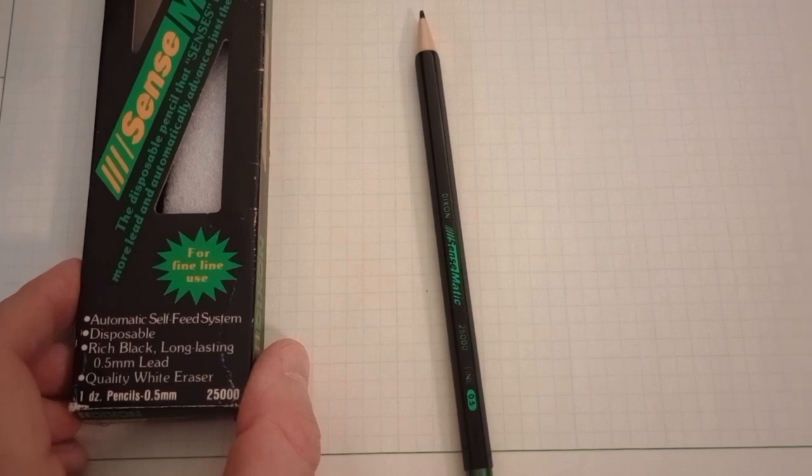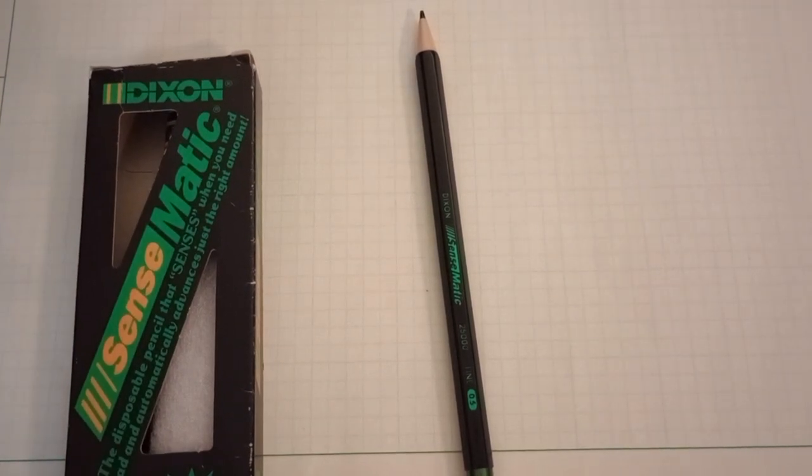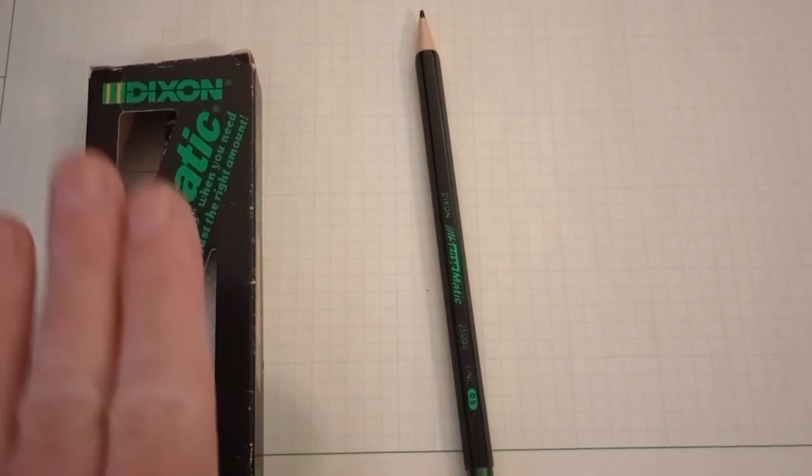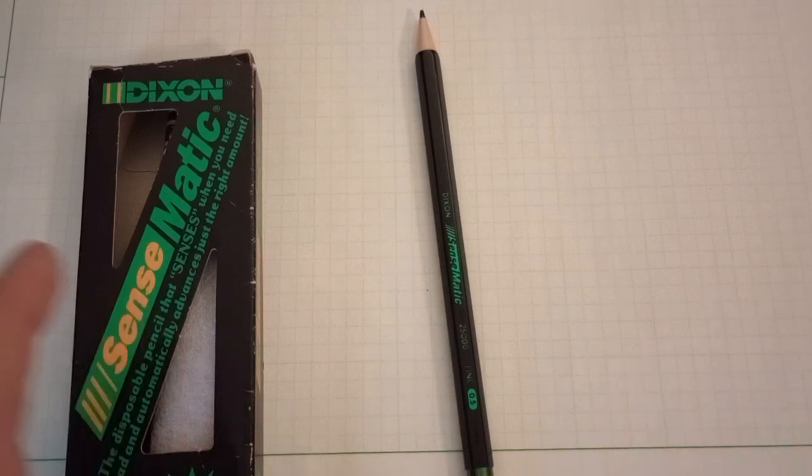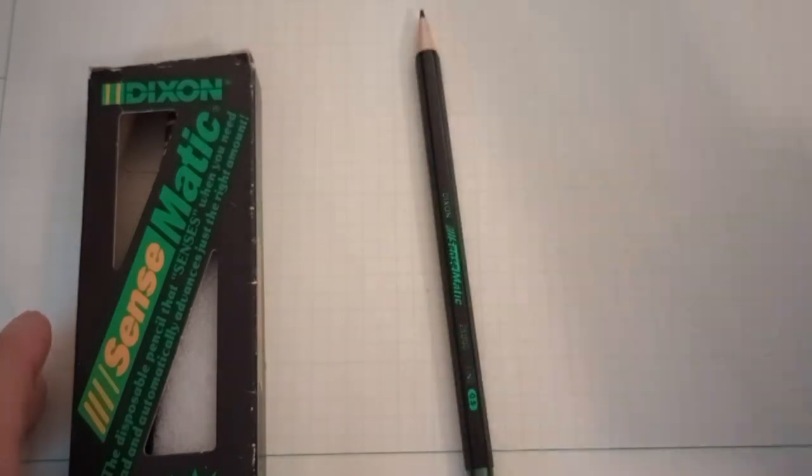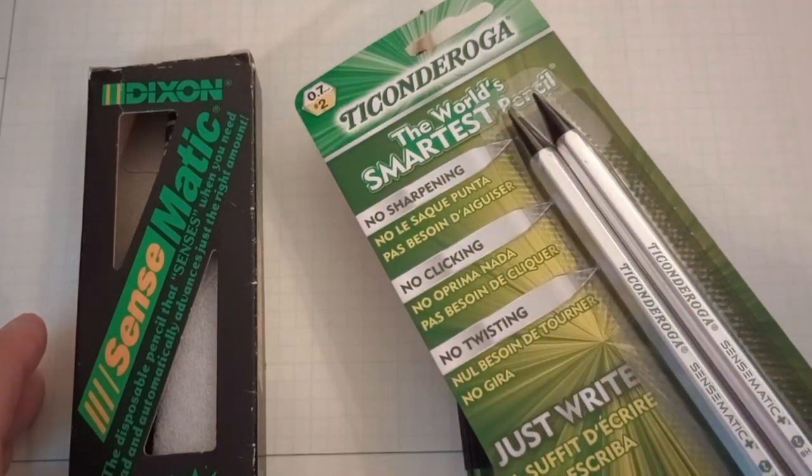So in the end of the eighties, Dixon brings out the Sensomatic mechanical pencil, which if I understand the timeline properly, they introduced it, it went away for a little while, then they reintroduced it relatively recently with some changes that hopefully we will see.